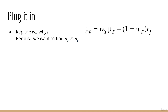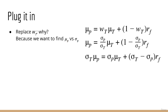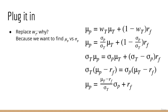We want to plot μ_p versus σ_p, so we need to find μ_p as a function of σ_p. Since w_t equals σ_p over σ_t, we plug that in, then multiply everything by σ_t to remove ratios. Next, we move all terms involving σ_t to the left and terms involving σ_p to the right, then factor out σ_t and σ_p. The final step is to divide everything by σ_t and add r_f to both sides, giving us the equation we need.